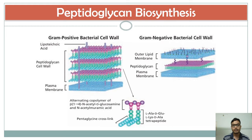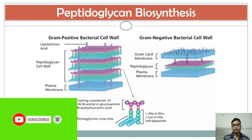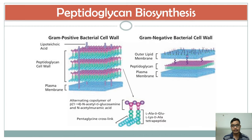Peptidoglycan is the major component of the cell wall of bacteria. In gram-positive bacteria the peptidoglycan layer is thick, but in gram-negative bacteria the peptidoglycan layer is thin. Peptidoglycan is essential for forming a bacterial cell wall. Welcome to Biology Concern — I am Animesh, and in this video I will discuss the formation or biosynthesis of peptidoglycan and how it helps form the bacterial cell wall.